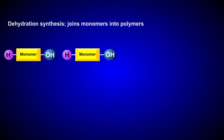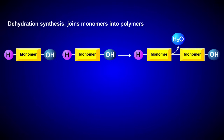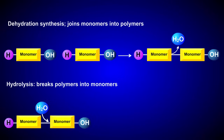Let's do a quick recap. During dehydration synthesis, monomers join to form polymers and water is released. The opposite happens during hydrolysis, where water is added to the reaction to break a polymer into monomers.